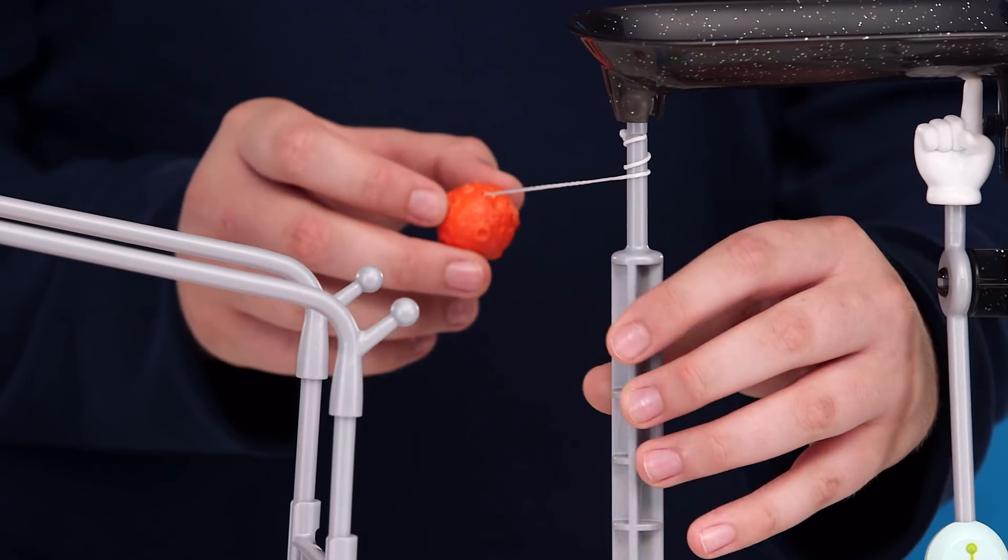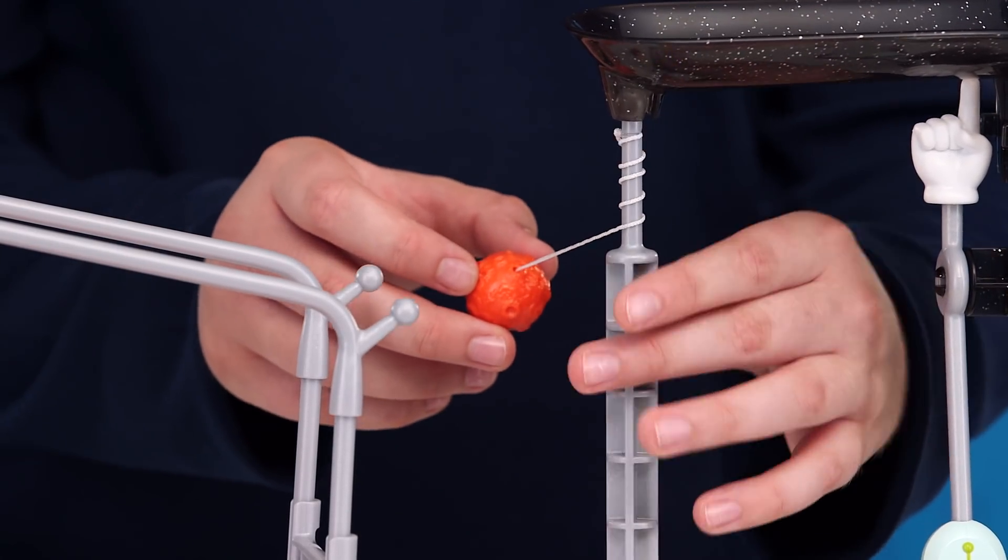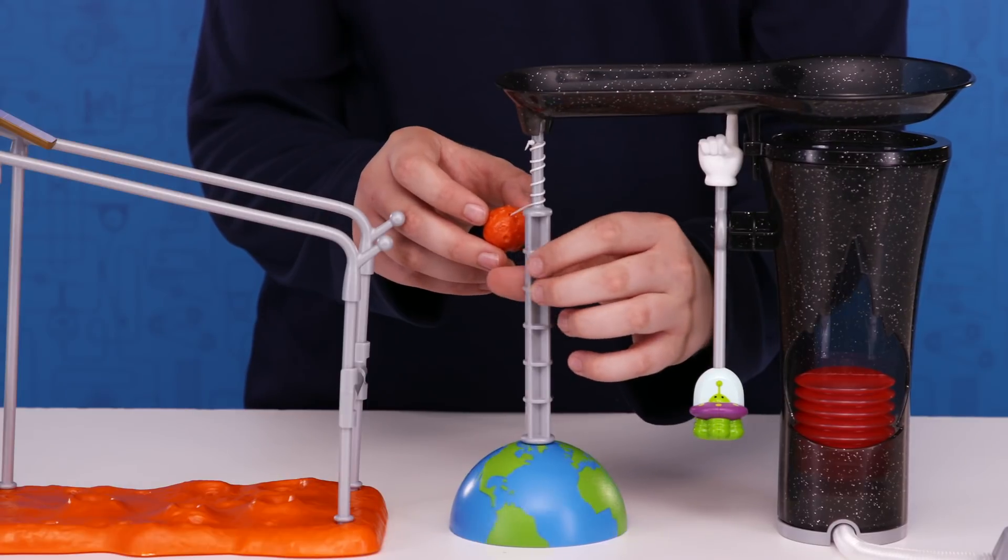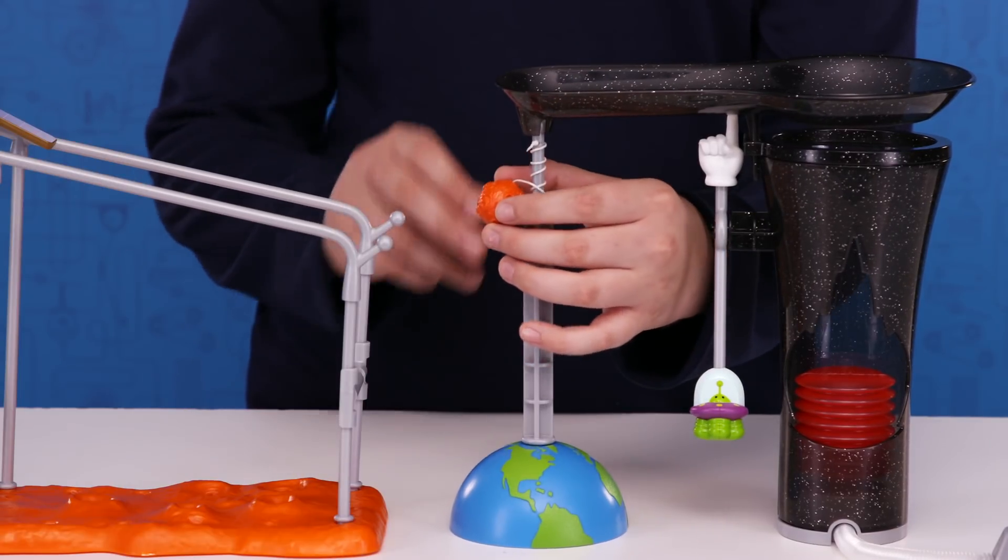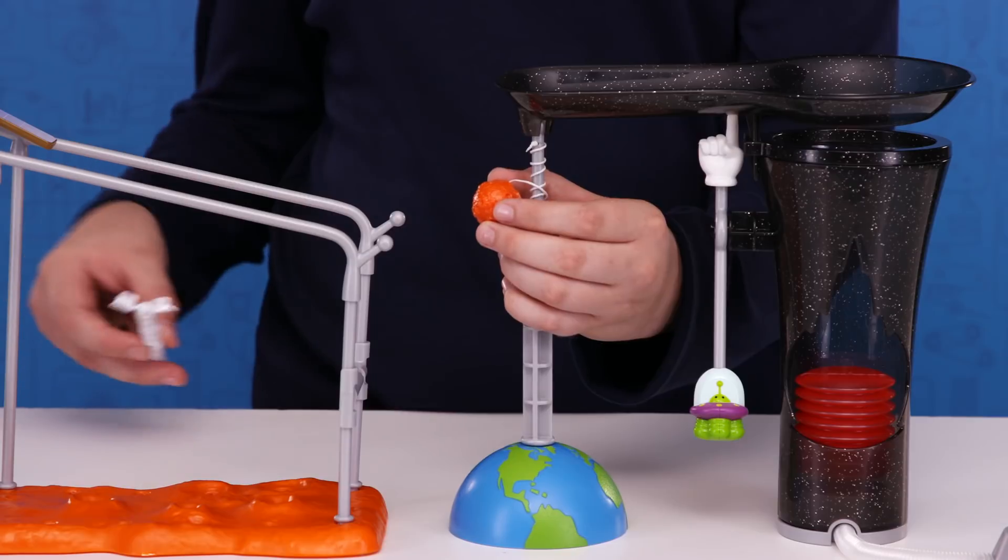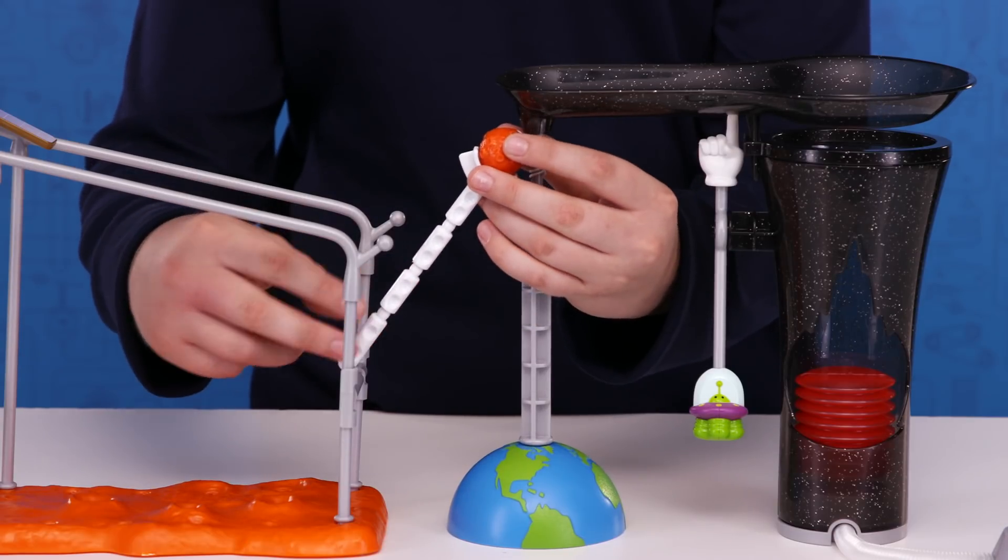Twist the asteroid around the North Pole by turning the North Pole in a counterclockwise direction as shown. Once twisted, fit the asteroid into the space arm by balancing the arm onto the space arm bracket.